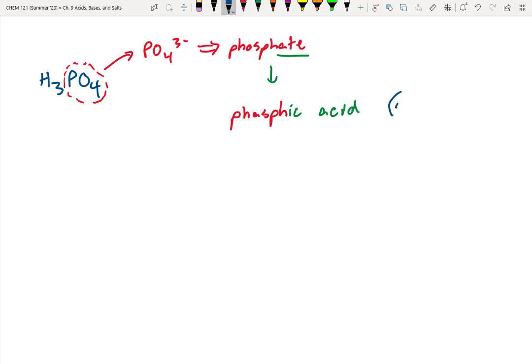But just like before, this sounds funny to most chemists. And so instead of adding a UR, we add an OR. Whoops. This should be an O here. So this would be phosphoric acid. So the OR is added after phosphor to make it sound better. So added to sound better.